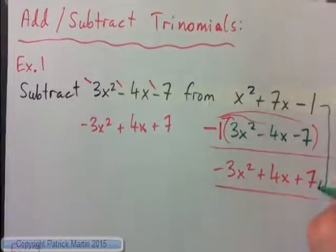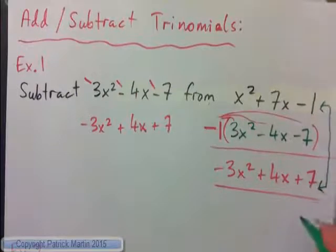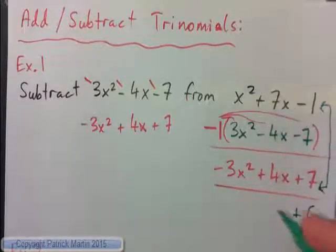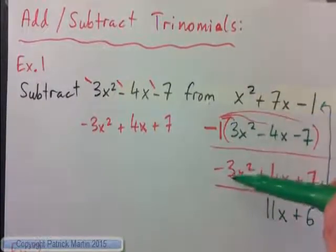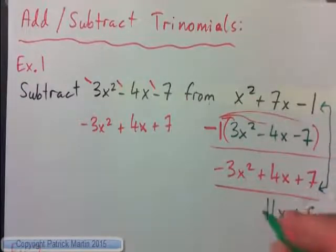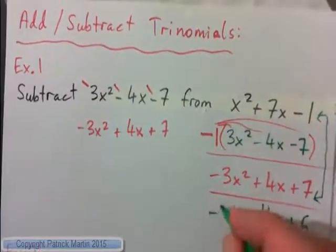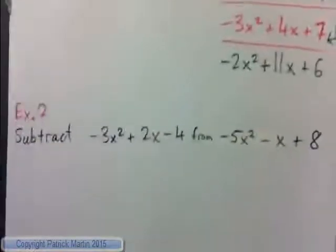So we've applied the subtraction, and now we just combine like terms. We put these two together: negative 1 plus 7 — 1 negative, 7 positives — gives plus 6. Then 7x plus 4x makes 11x. And x squared minus 3x squared is negative 2x squared. So our answer is negative 2x squared plus 11x plus 6.